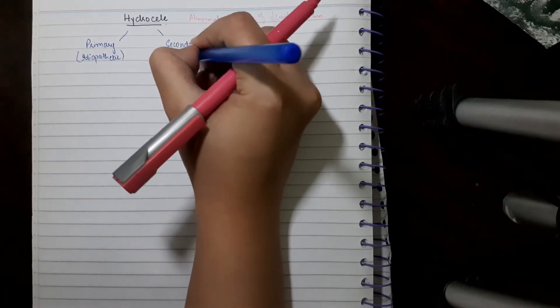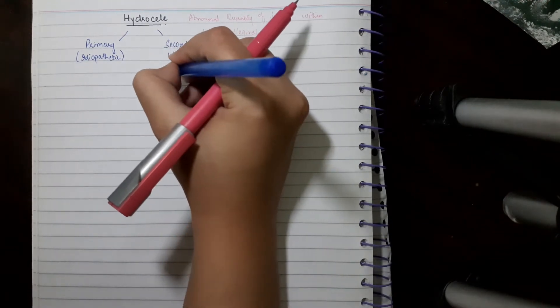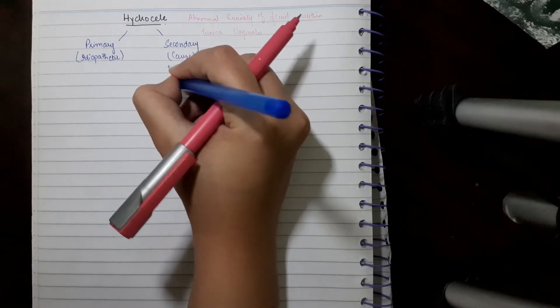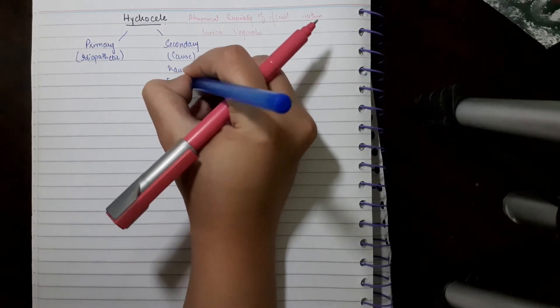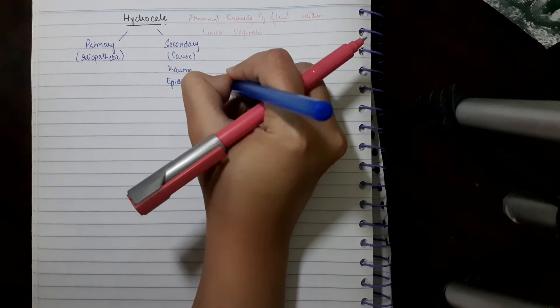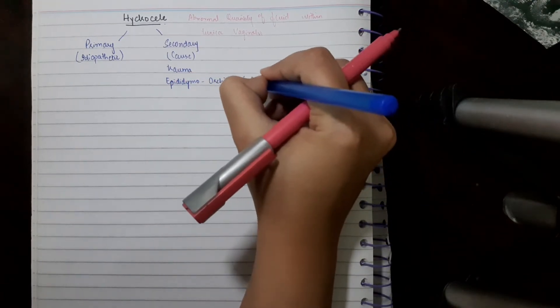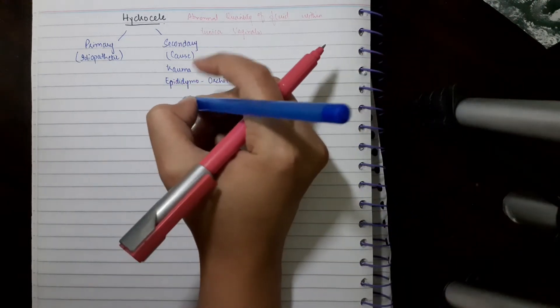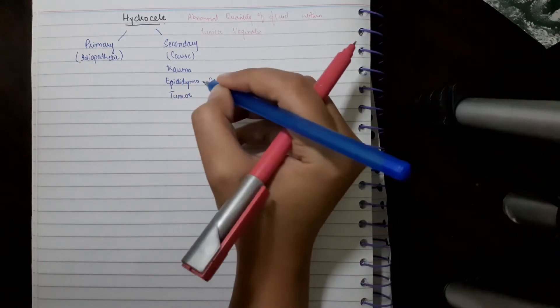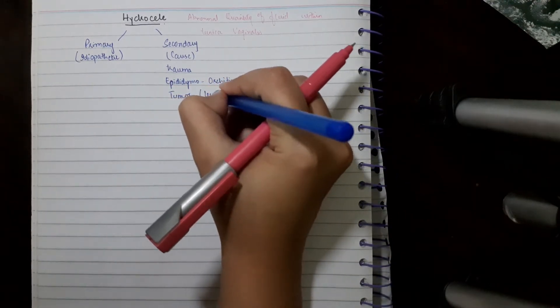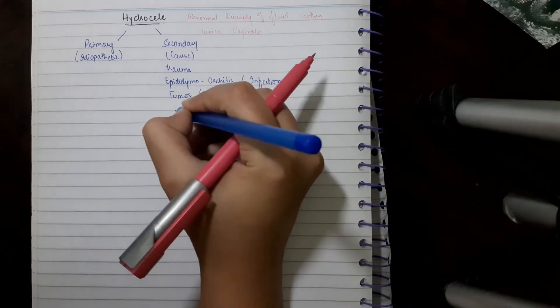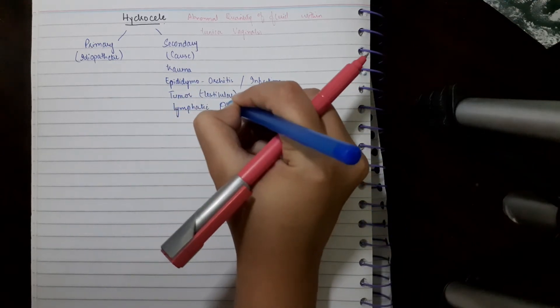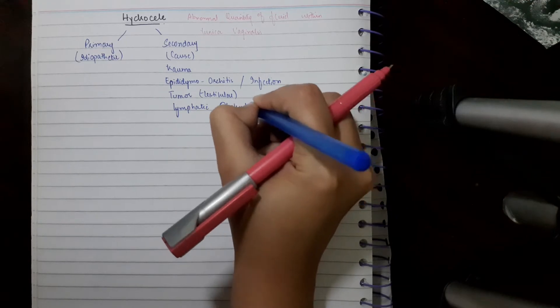Secondary hydrocele causes may include trauma, any kind of trauma, epididymal orchitis and other infections, orchitis, epididymitis, etc. Then comes tumor, testicular tumor, and at the end comes lymphatic obstruction.